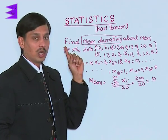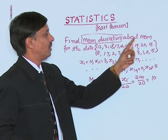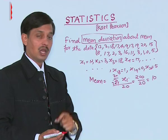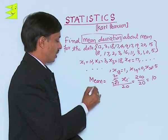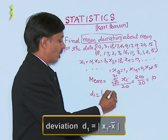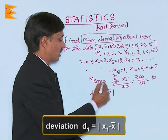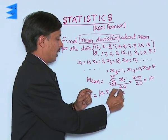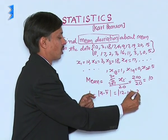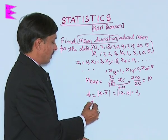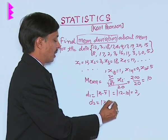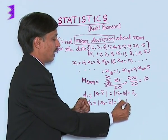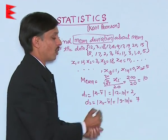Now I want to explain how we find the mean deviation about the mean. The first deviation d1 is the mod of the first observation minus the mean: |12 - 10| = 2. The second deviation d2 is |3 - 10| = |-7|, so mod gives 7.